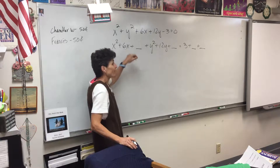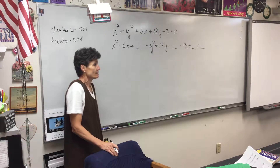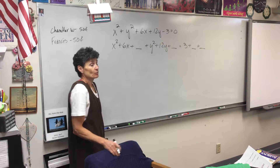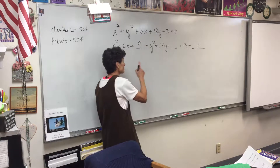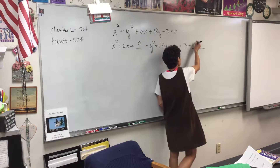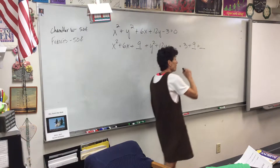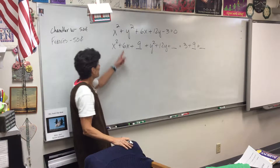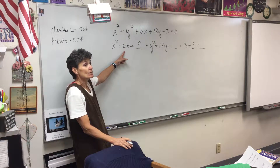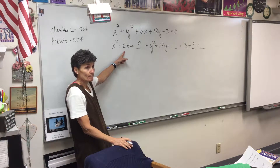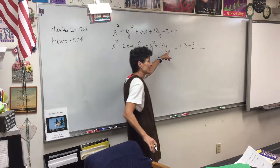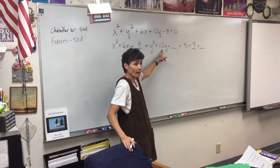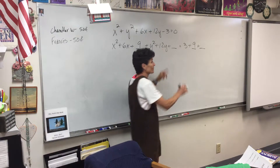Half of 6 is 3, and 3 squared is 9. Those of you that are not adding the right number need to pay attention — it's half of the coefficient squared. Now we're going to do the same thing here: half of 12 squared is 36.